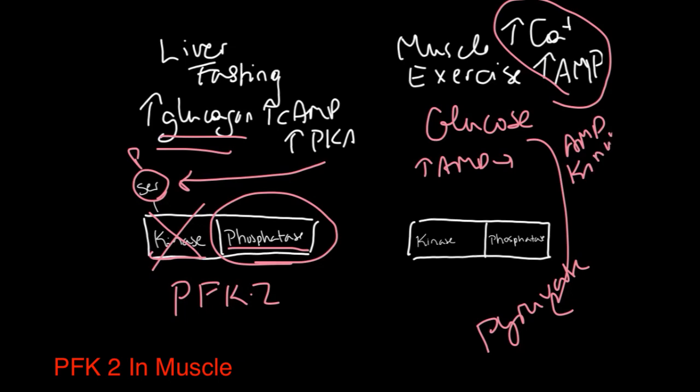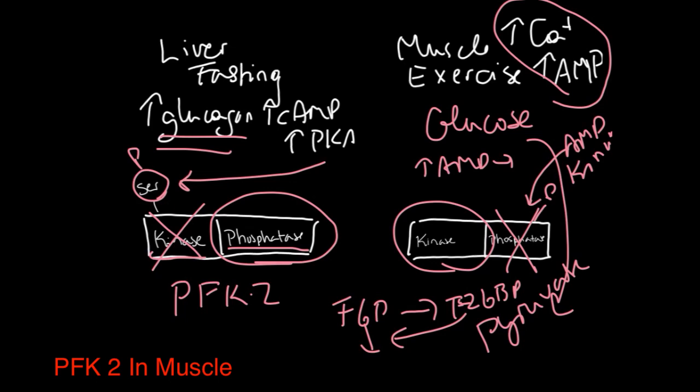AMP kinase will phosphorylate the phosphatase domain, making it act as a kinase. So now in the muscle, fructose-6-phosphate is generating fructose-2,6-bisphosphate, and that's a positive regulator of PFK1.